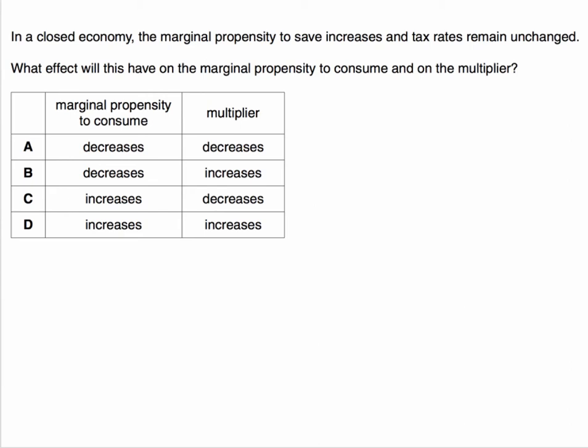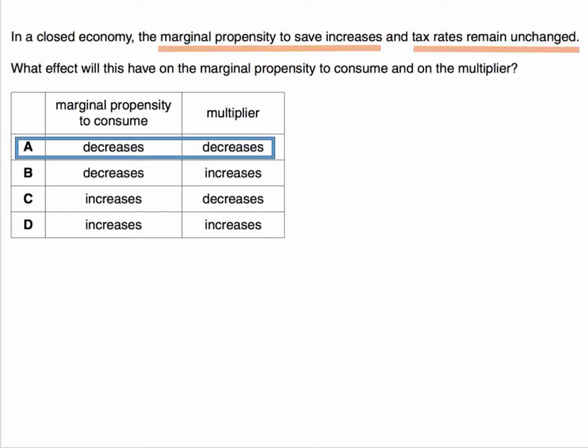So we're told that the marginal propensity to save has increased. What's the effect on the marginal propensity to consume and what's the effect on the value of the multiplier? The correct answer is A.